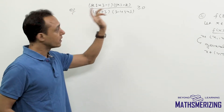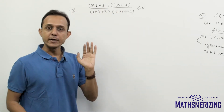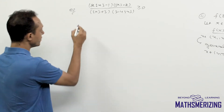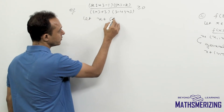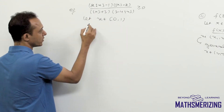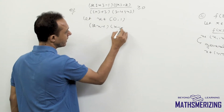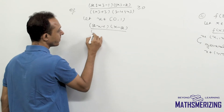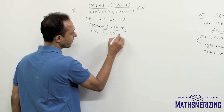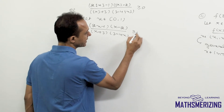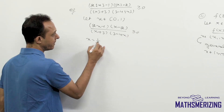For example, suppose the question is: (2{x} - 1)({x} - 2)({x} + 3)(3 - 4{x}) ≥ 0. What I'll do is let x ∈ [0, 1), so I can write it as (2x - 1)(x - 2)(x + 3)(3 - 4x) ≥ 0.